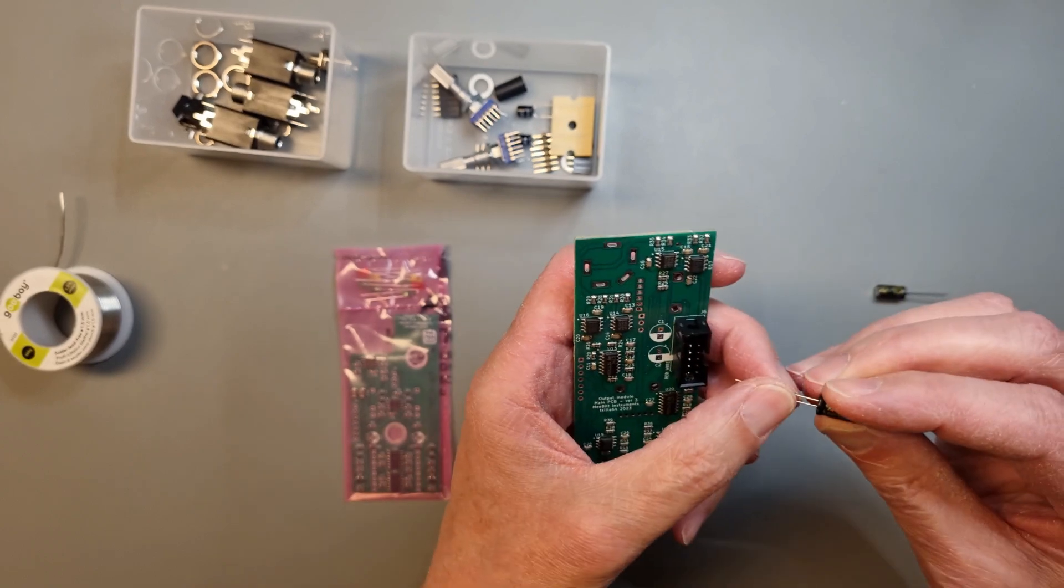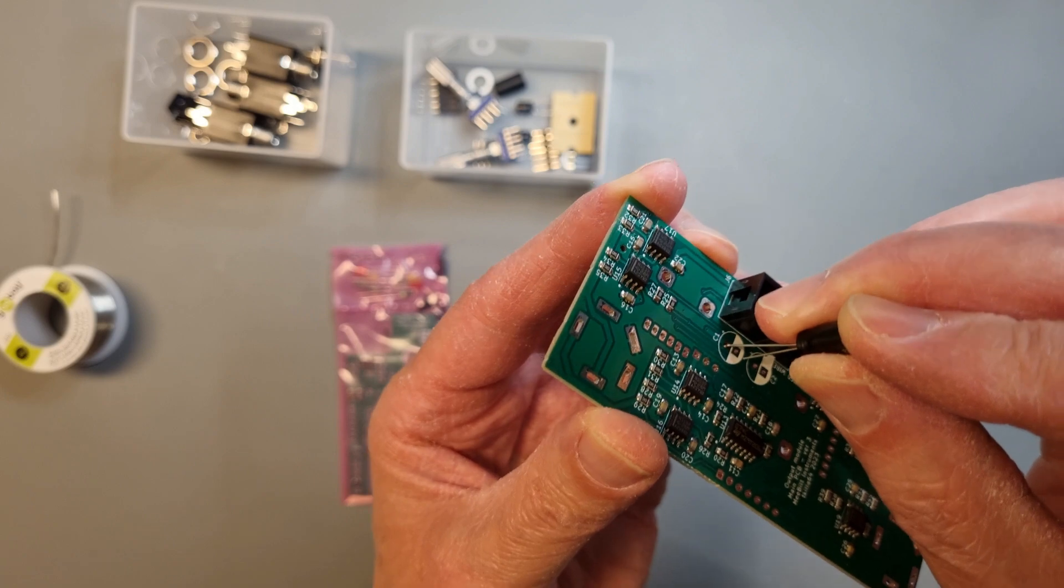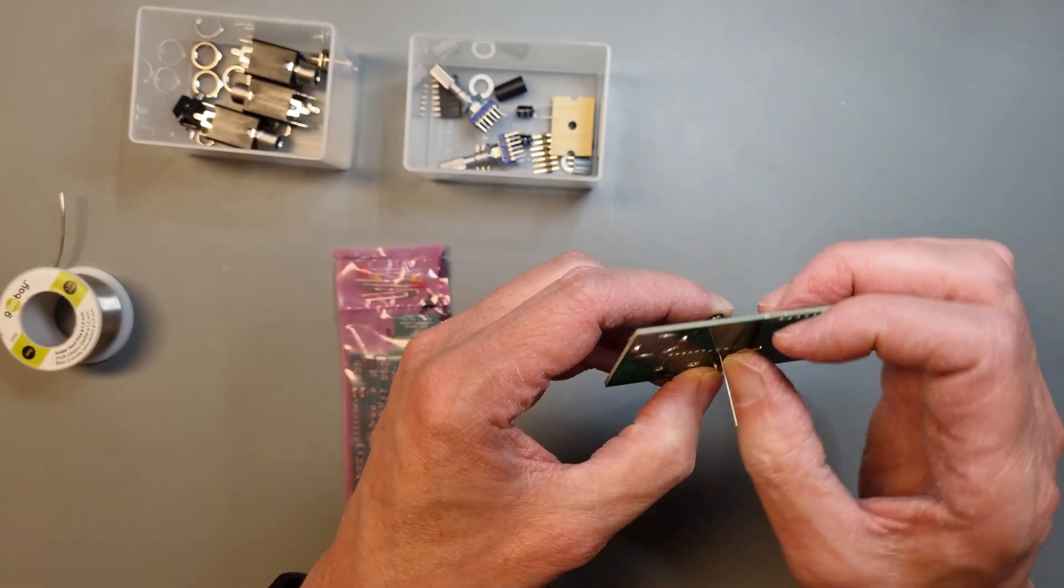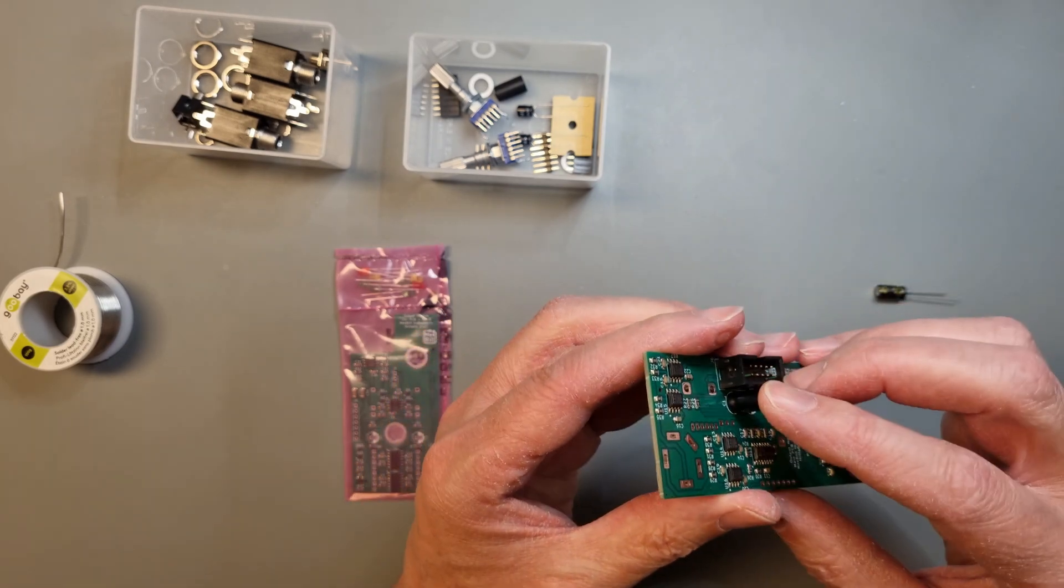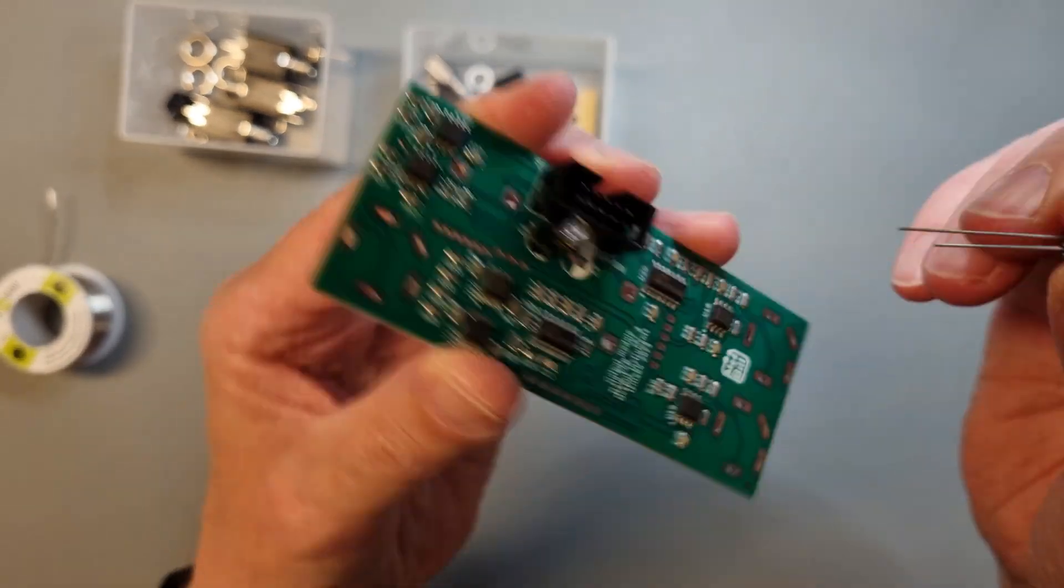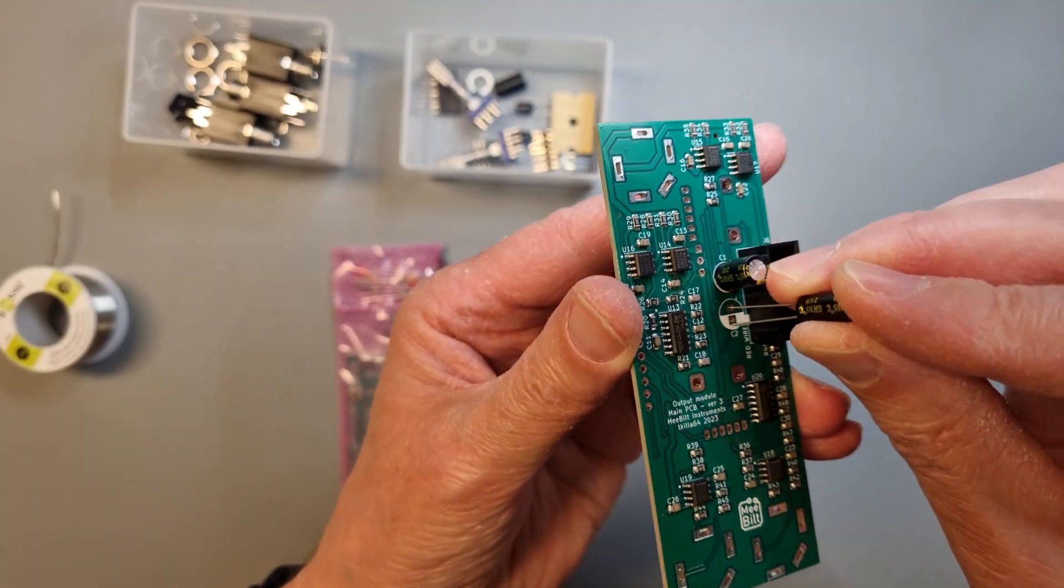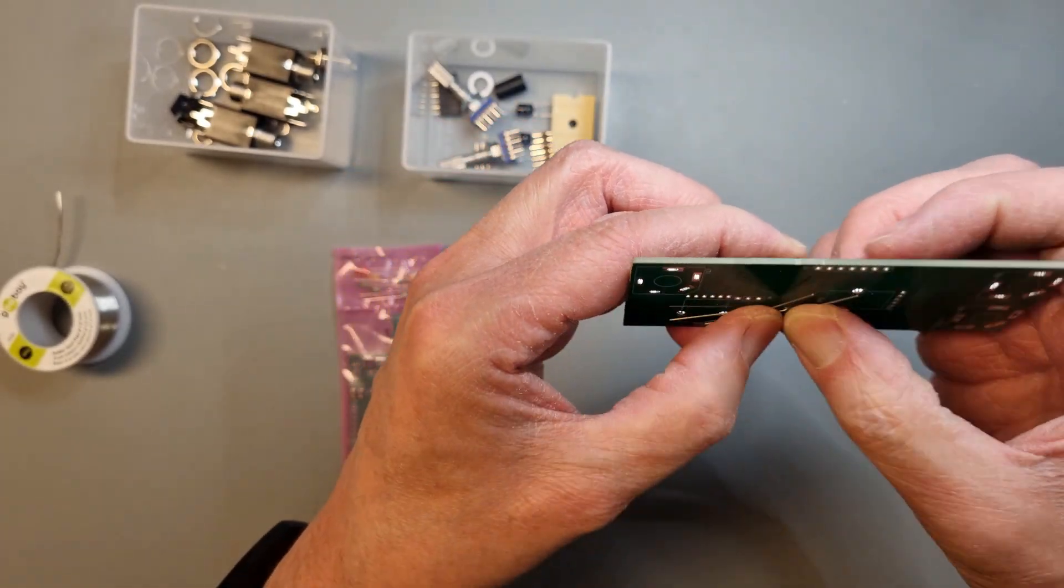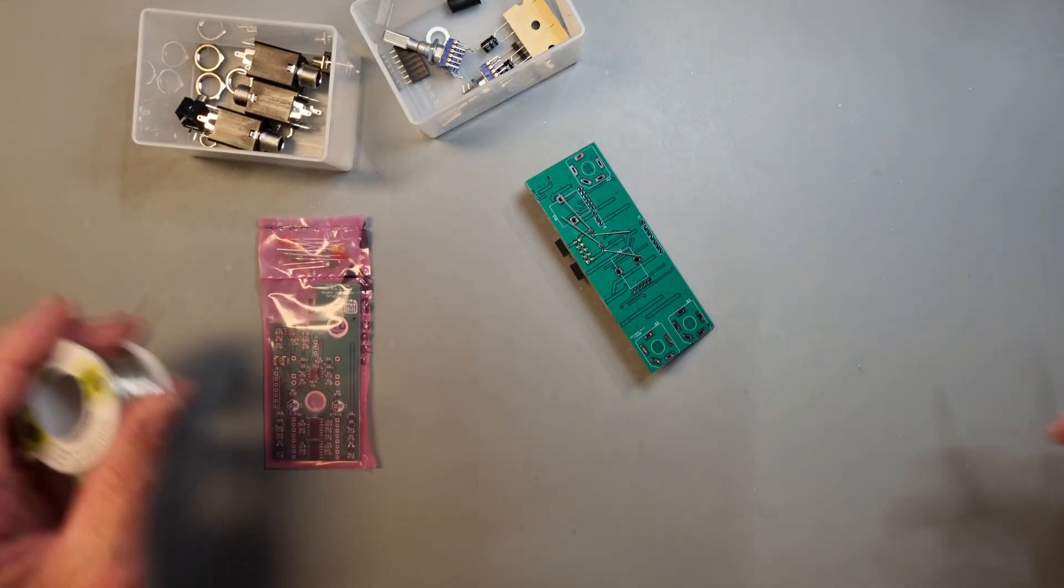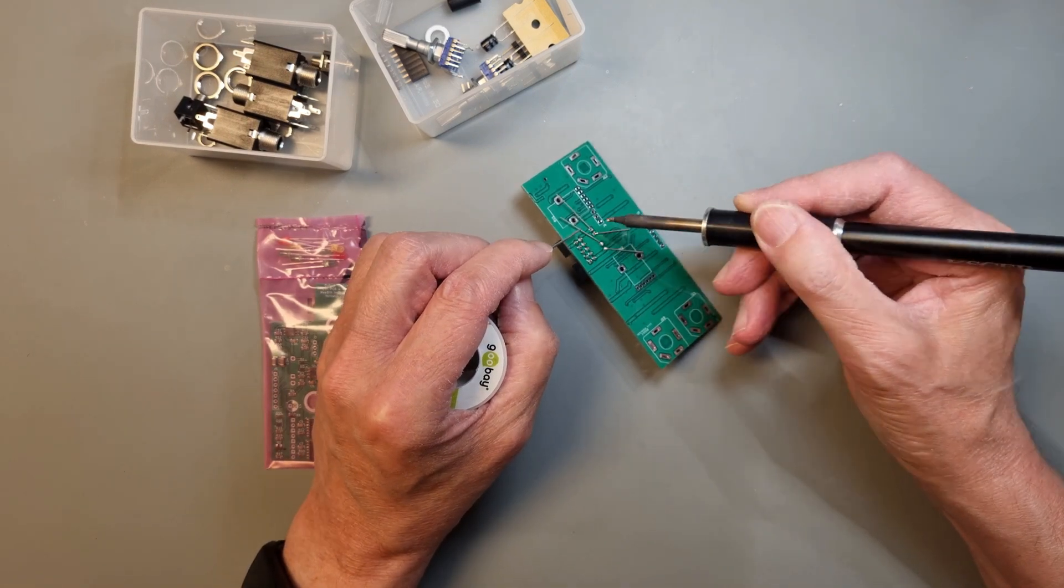Okay, next we have the capacitors I was talking about earlier. The leg with the minus marking should go onto the side with the large white marking on the PCB. Go ahead and solder them in place, trim the legs and touch up the solder joints if you need to.